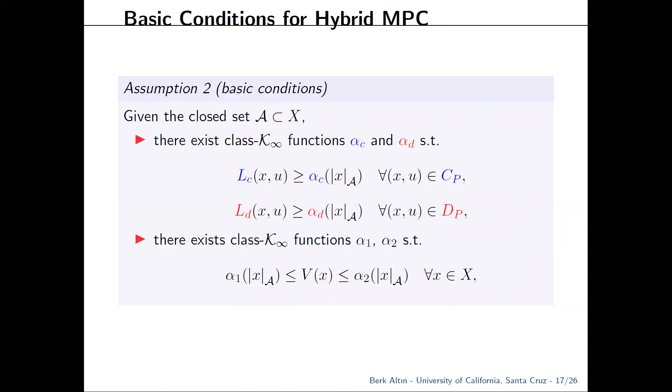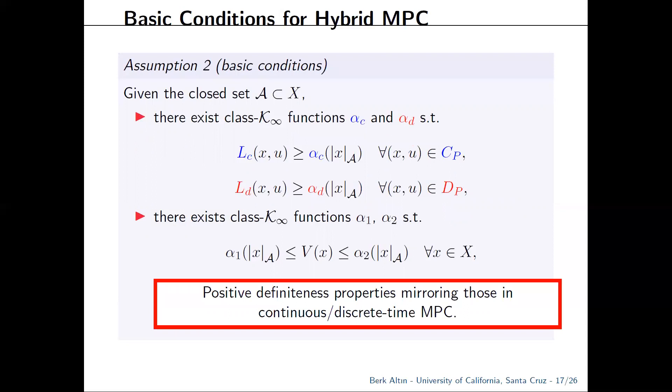Now, to make sure that the inequalities that we came up with lead to J star being a Lyapunov function, we can impose some basic positive definiteness properties. The first two make sure that the value function is decreasing due to the previous result. And this one ensures that it is upper bounded by a K infinity function since J star is less than V. So, these are pretty standard assumptions.